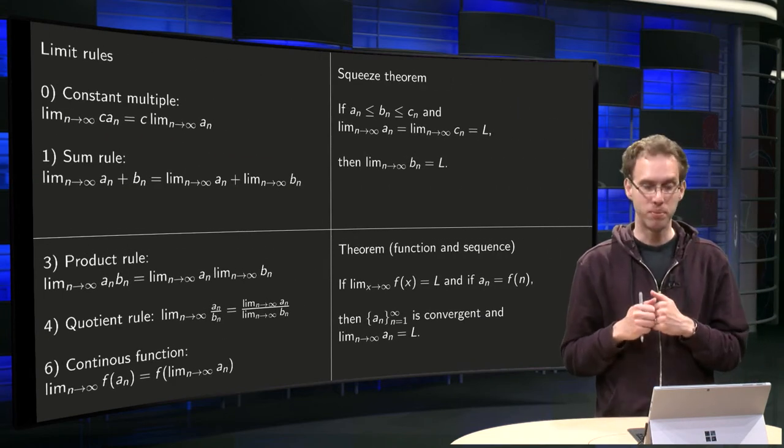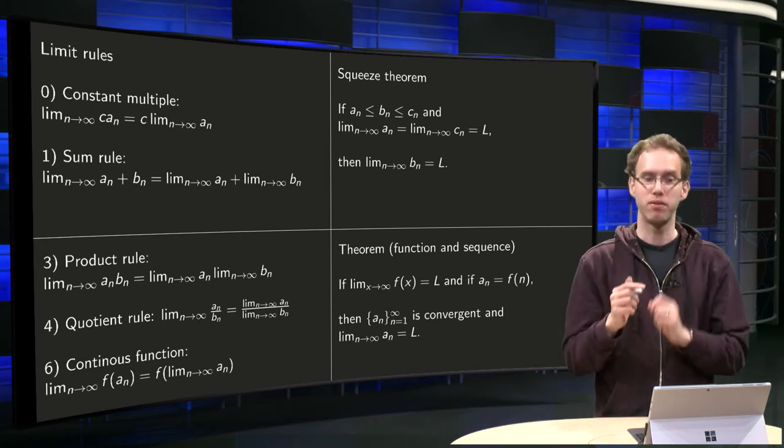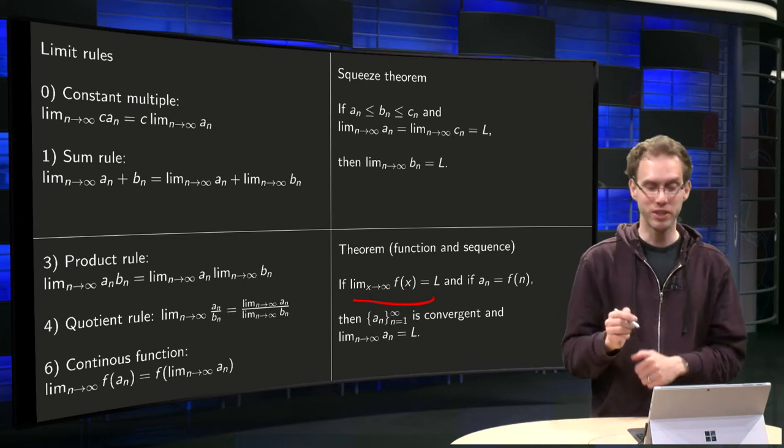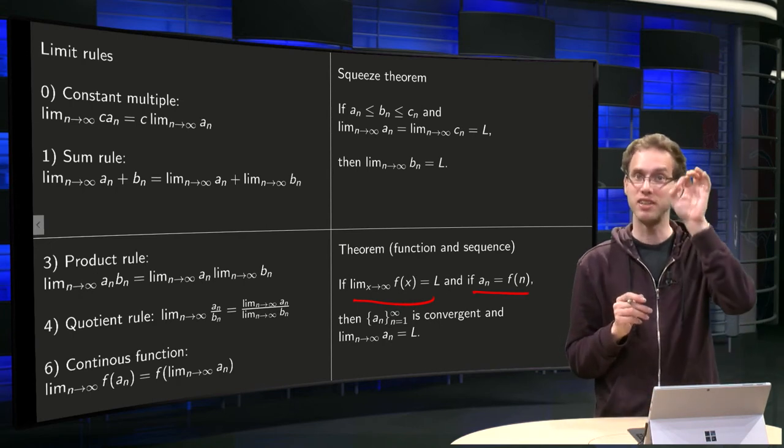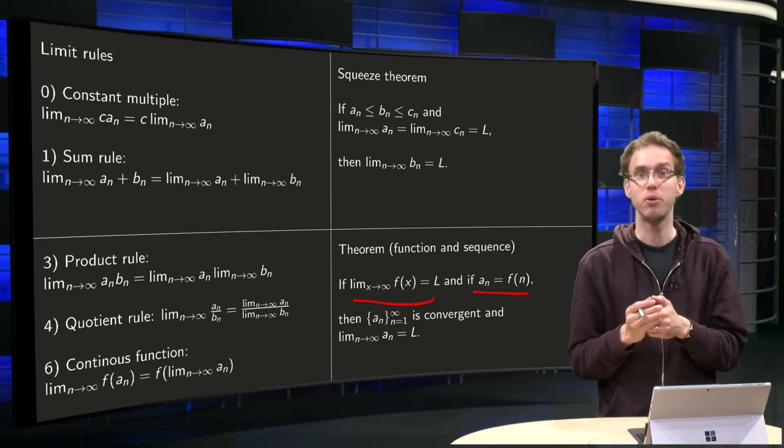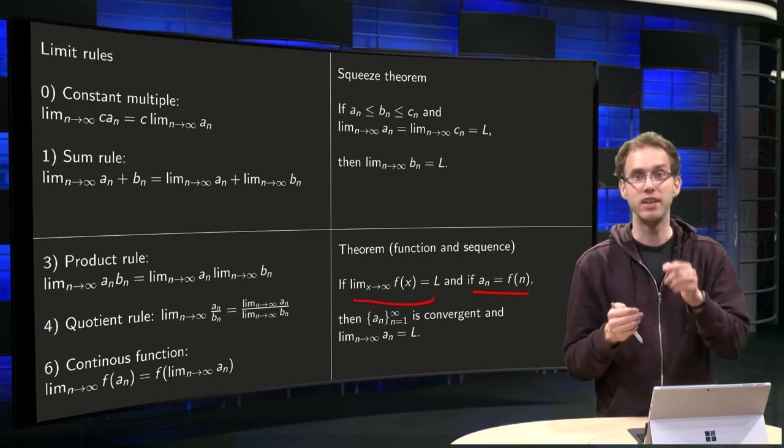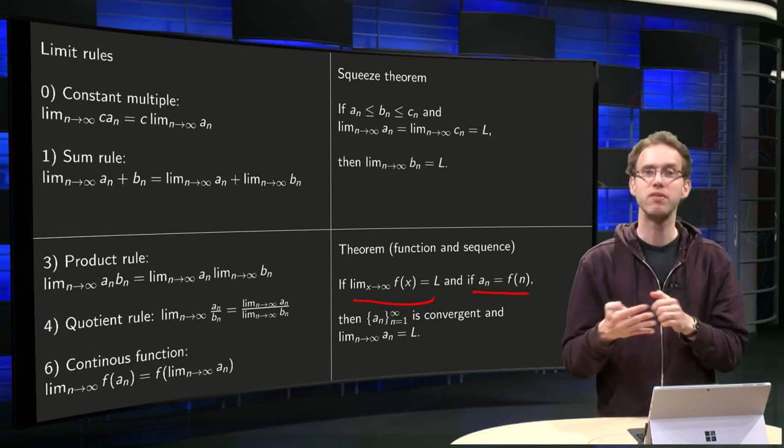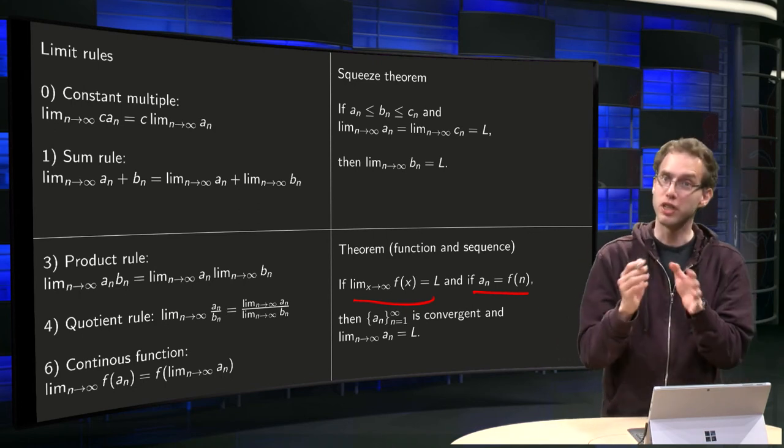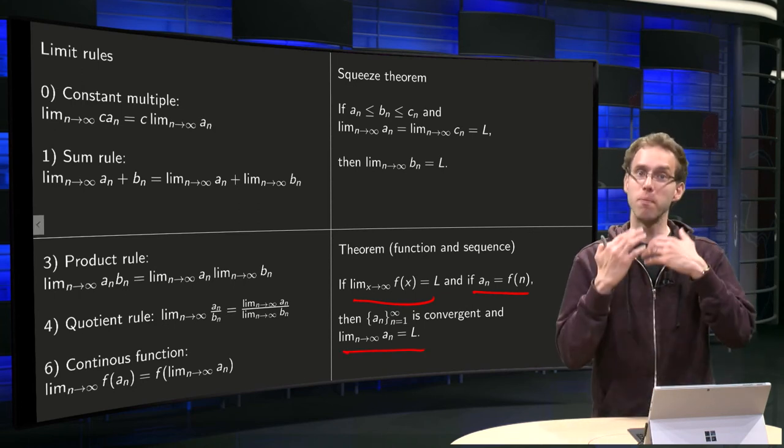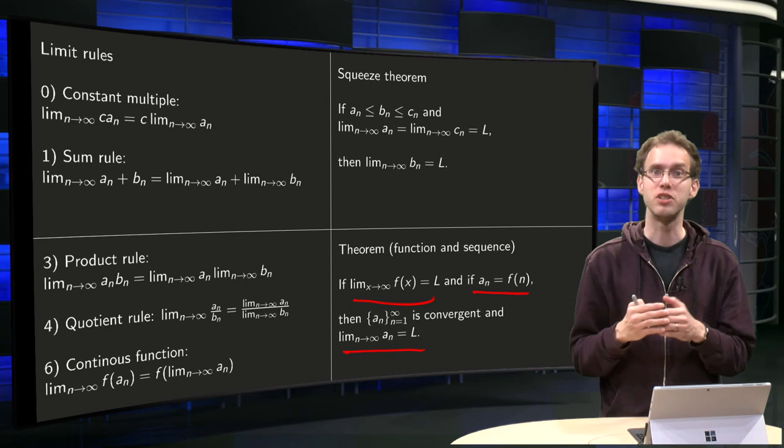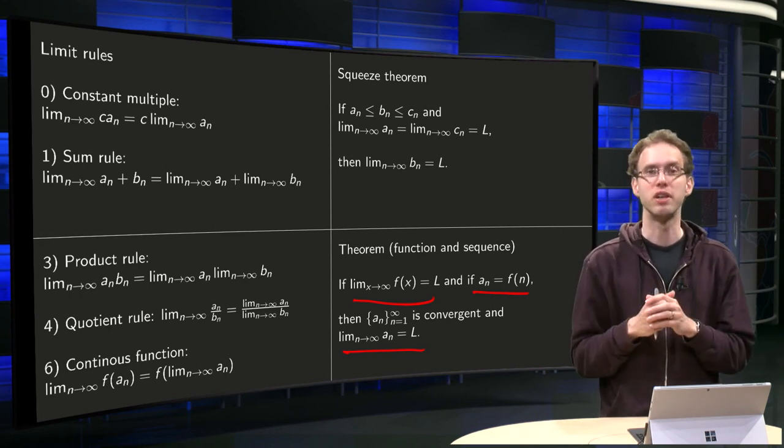And then finally a theorem which relates functions and sequences. Suppose you have your limit of a function fx, and this limit exists for x to infinity. And suppose you have the corresponding sequence, so an is a function evaluated at the integer values. So remember when we have for example fx equals 1 over x, our an will become 1 over n. fx is defined for all x, and your an is only defined as n equals 1, 2, 3, etc. So we have the sequence corresponding to the function. If this limit of my function exists, then also the sequence an is convergent and has the same limit. So if you know that the limit of the function exists, then also the limit of the sequence exists. But this is actually stronger, the limit does not necessarily hold vice versa.